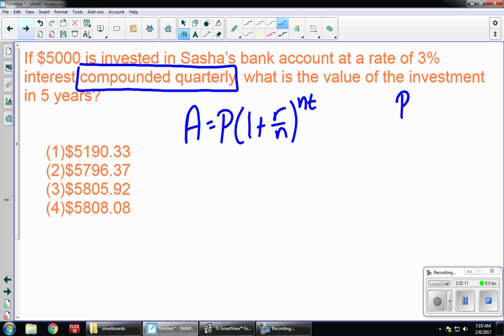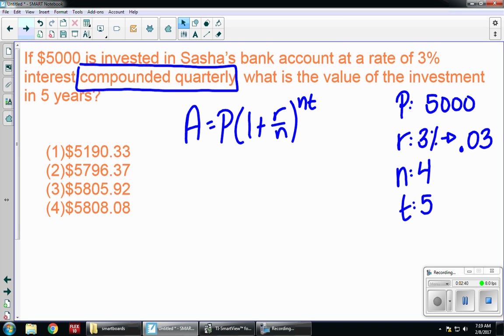So here's my first formula. P is the initial, so the initial amount we have is $5,000. R is the rate. They told us that it was a rate of 3%. And when I convert 3% to a decimal, it's going to be .03. N is the number of times I'm compounding. I'm compounding quarterly, so quarterly happens four times a year. And T is the time in years. They want to know after five years how much money will Sasha have.